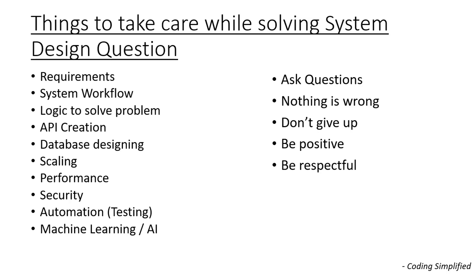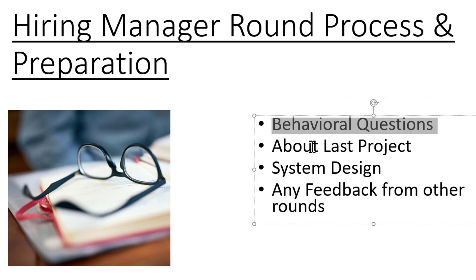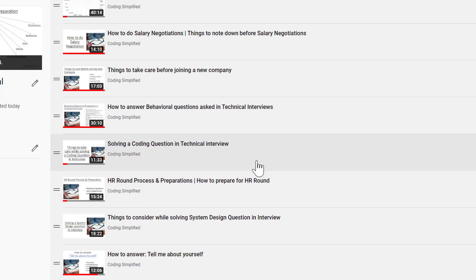In the hiring manager round, the four important areas are: behavioral questions, your last project, system design, and any feedback from the previous rounds. The hiring manager focuses on these four aspects. This is not a limited list — the manager can ask any question that helps them know whether the candidate will be suitable for their team.